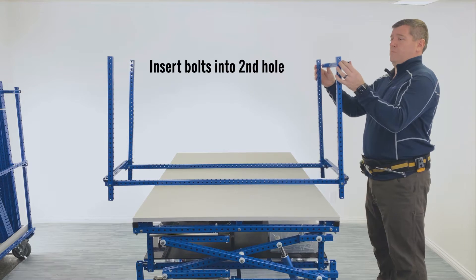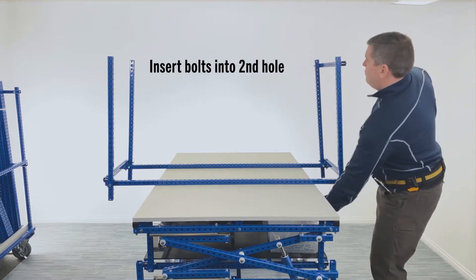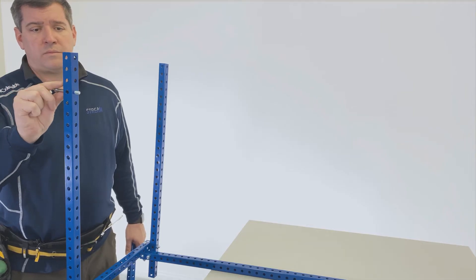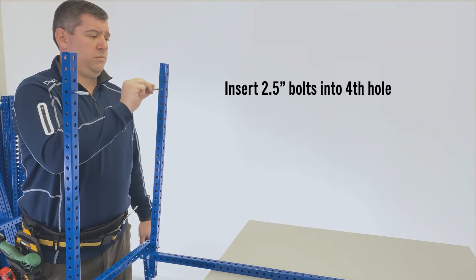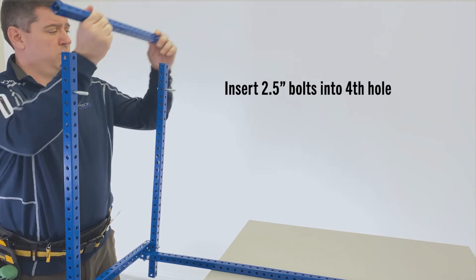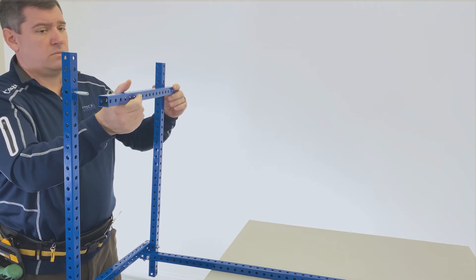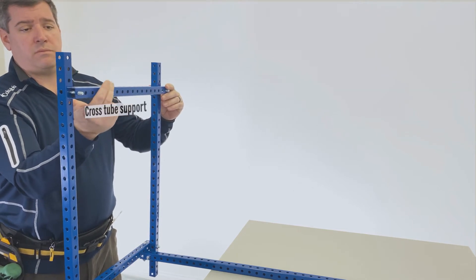In this part of the assembly the structure will appear to be wobbly. That is okay. At the end of the build we will tighten them down with a wrench and ratchet driver. Place bolt in the fourth hole from the top. Attach crossbar support tube using two and a half inch bolts.